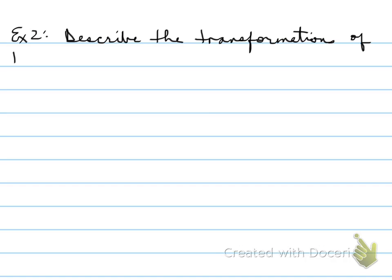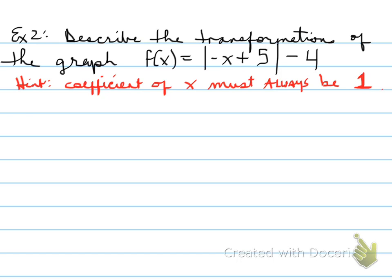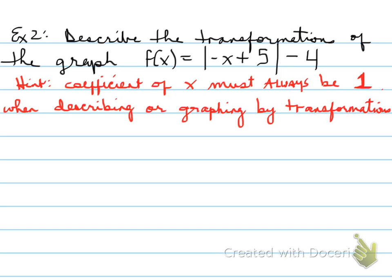Example number two. Determine the transformation of the graph of f at x is equal to the absolute value of minus x plus five and then minus four. So you're asked to describe the transformations. You cannot describe the transformations as they are. The reason why is you must remember the following hint. The coefficient of x must always be one when describing or graphing by transformations. So this negative right here has to be pulled up. We have to pull them up before we do anything else. So f at x is equal to negative bracket x minus five. If I expanded this, we would actually get this. So it is actually the same equation. And now what we're going to do is describe it.